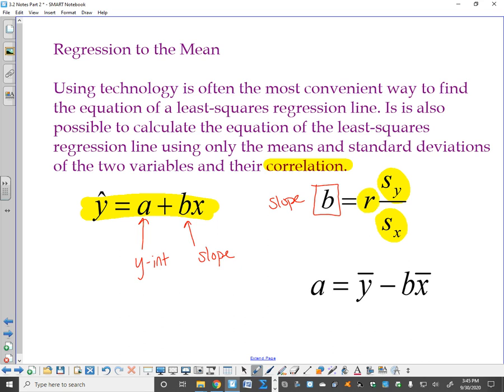So your r, your correlation coefficient, times the standard deviation of your y's over the standard deviation of your x's. Now the y-intercept, which is a, can be found the mean of your y's minus b, which is your slope, times the mean of your x's. So here's what I need. I need x-bar and the standard deviation of my x's, and I need y-bar and the standard deviation of my y's, and I need my r.